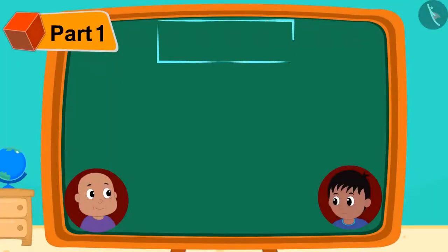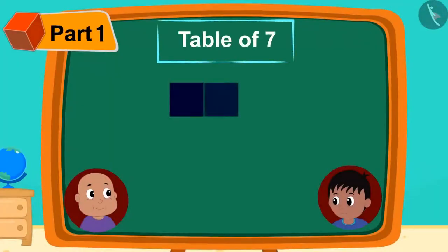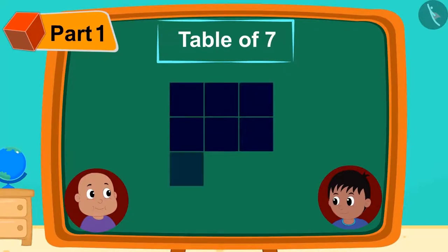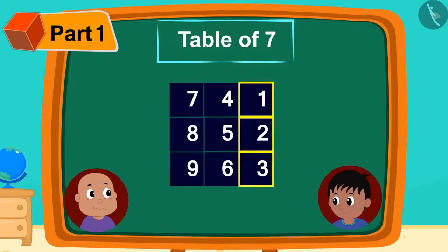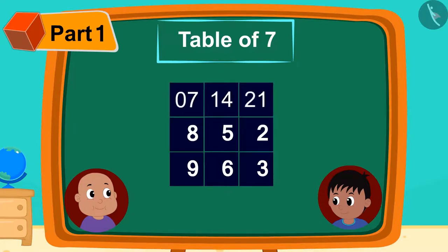Now Raju made a structure similar to the table of 3 for a table of 7. But this time, Raju started writing numbers from 1 to 9 from this box. Then, next to the digits written in the first line, he wrote 0, 1, 2.